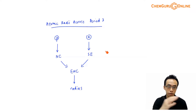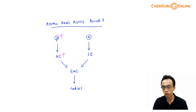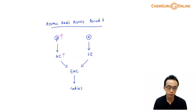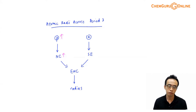Across period 3, the proton number increases, and therefore the nuclear charge increases — the nuclear charge is simply the charge of the nucleus. With more positive protons, the nucleus becomes more positively charged, and it should have a stronger attraction on the electrons.